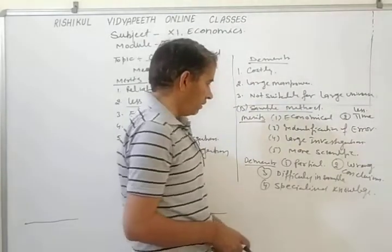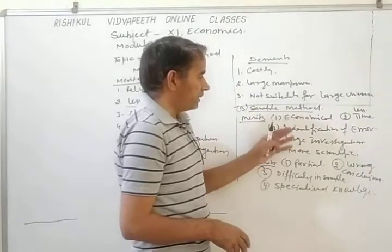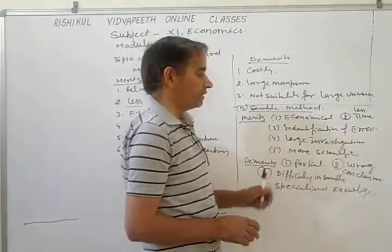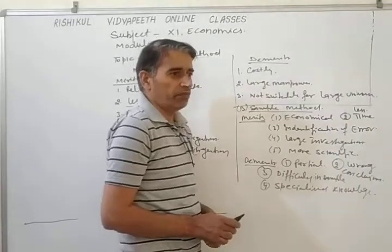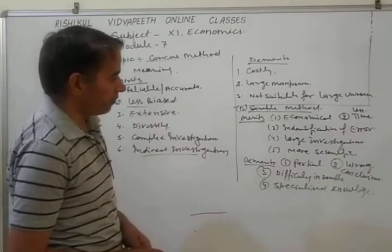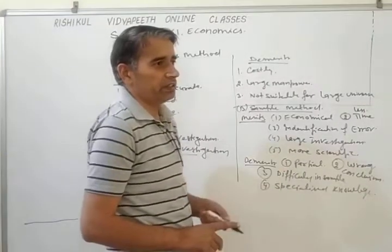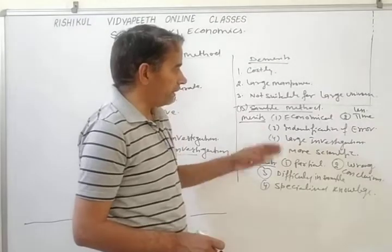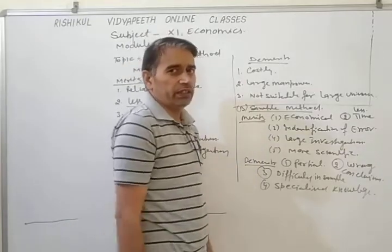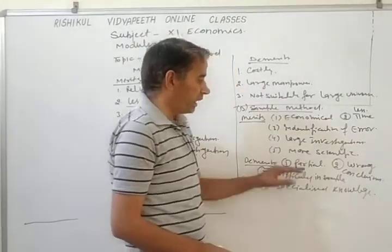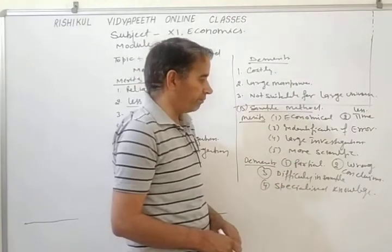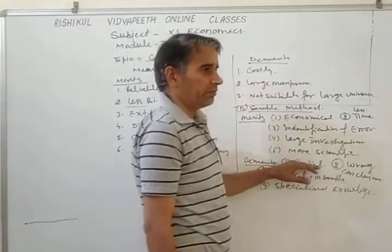But without these merits, the sample method also has some limitations or demerits. The first is partial, meaning there is a chance of bias. As in the census method we said there is less bias, but in this method the chance of biasness is more because the enumerator has two options — which items to select and which not to select — and sometimes there is a chance of partiality by the investigators.